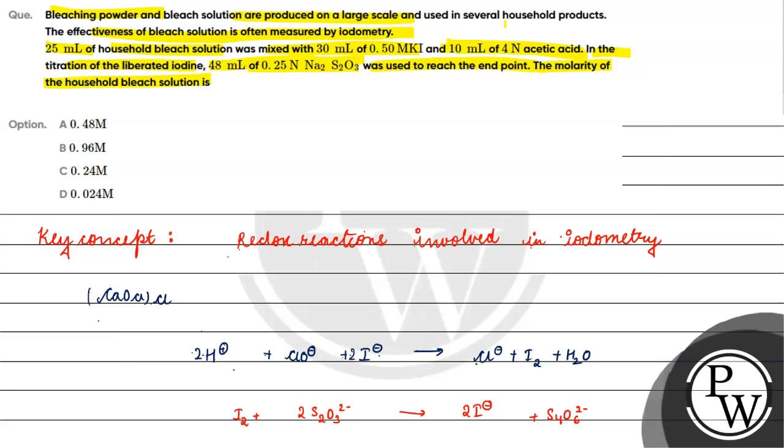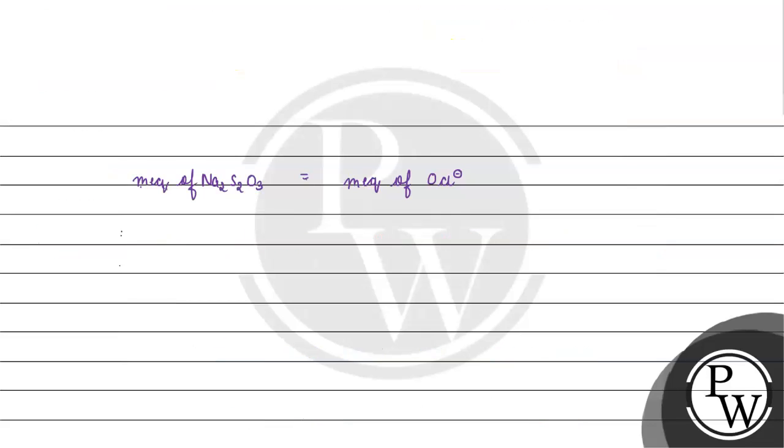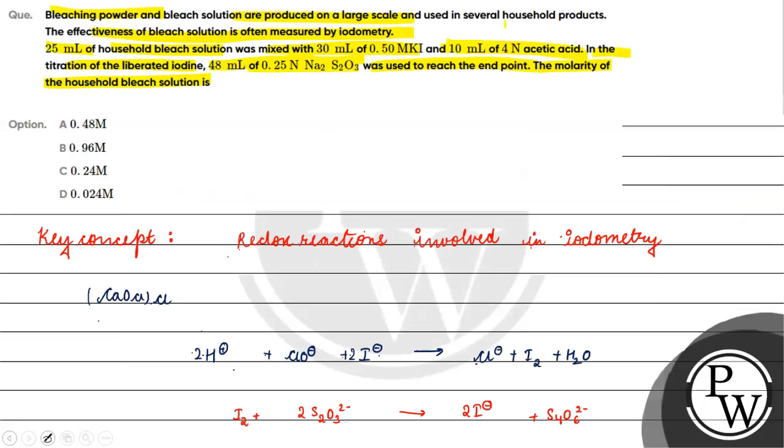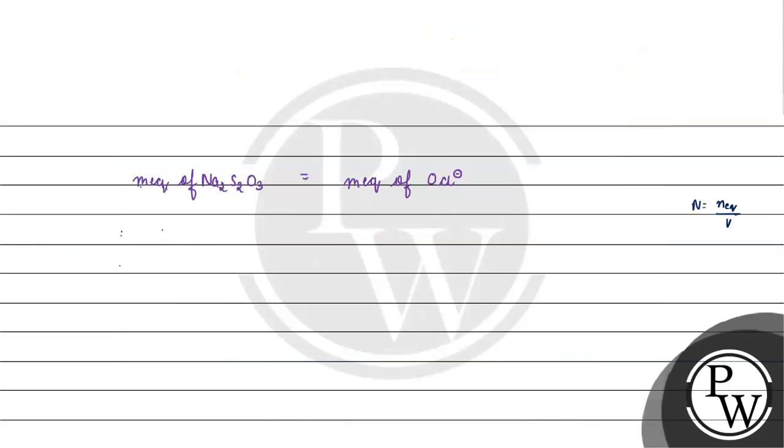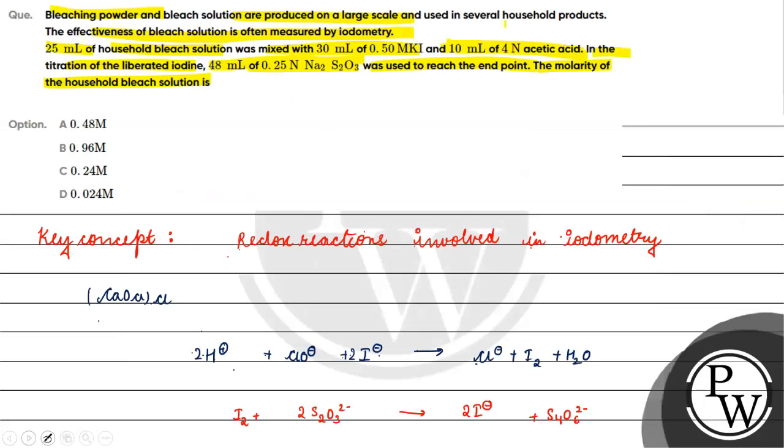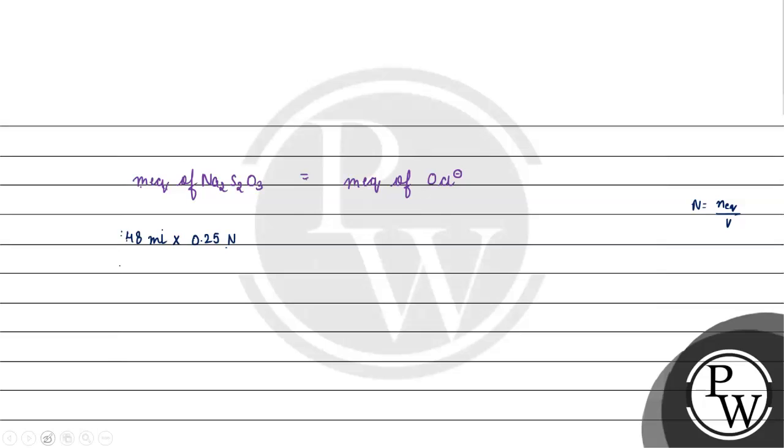We will find out volume into normality to get millequivalence of Na2S2O3, because normality equals number of equivalents by volume of solution. Normality into volume gives number of millequivalents. We have 48 ml into 0.25 normal, this is equal to 12 millequivalents.